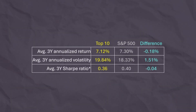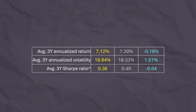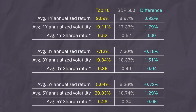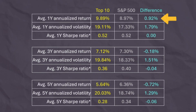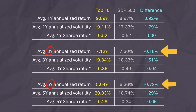Calculating the average rolling return, we can see that the top 10 actually underperforms. The average return of the top 10 is only higher than the S&P 500 when looking at a one-year holding period. If one looks at the average return after three or five years, the top 10 portfolio underperforms.